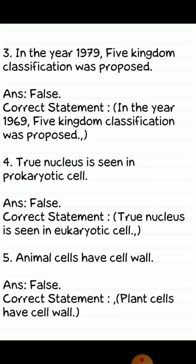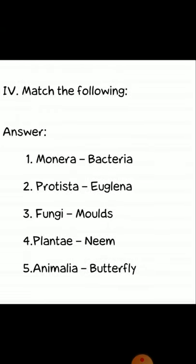Fifth true/false question: animal cells have cell wall. Answer: false. Correct statement — plant cells have cell wall.